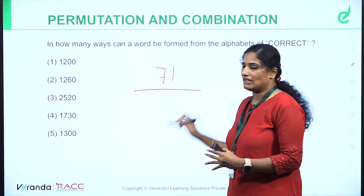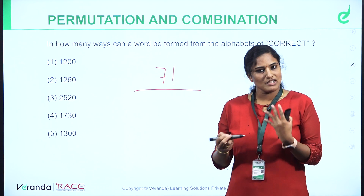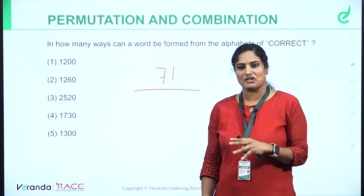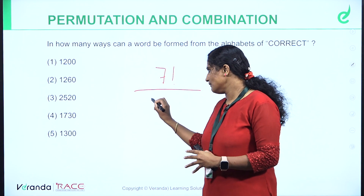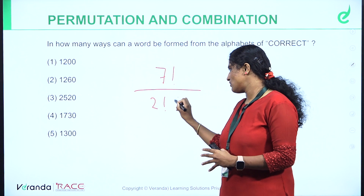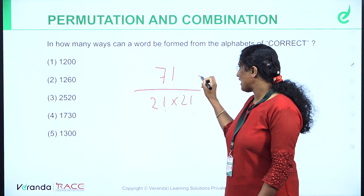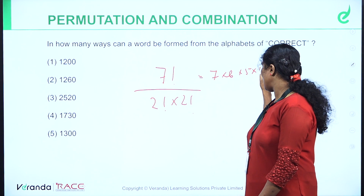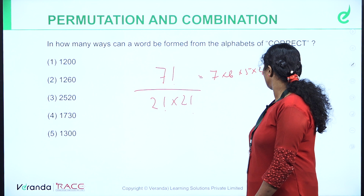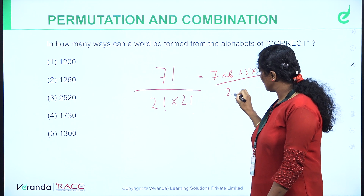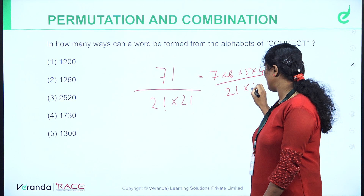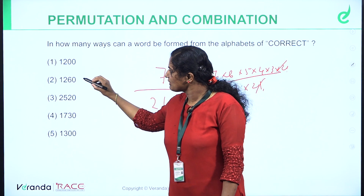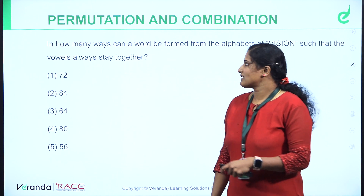In this case, there are repetitions. The word CORRECT has C repeated twice and R repeated twice. So we divide: 7 factorial by 2 factorial into 2 factorial. 7 factorial is 7×6×5×4 down to 1. We divide by 2 factorial twice. The answer is 1260.